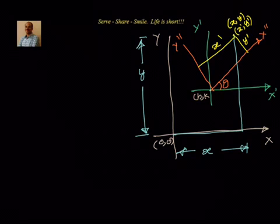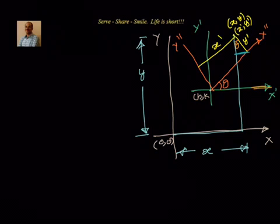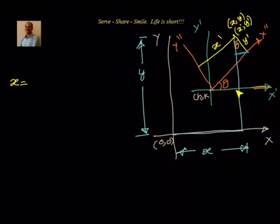We also know that if the angle made between x dash and x double dash is theta, then the angle between their perpendiculars is also equal to theta. Now, we will try to find out the value of x in terms of x dash. For that, we will take x dash and try to take its horizontal component.